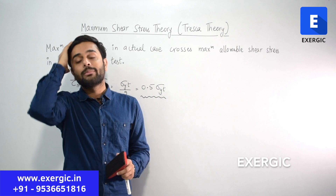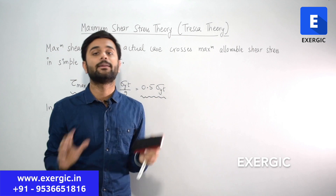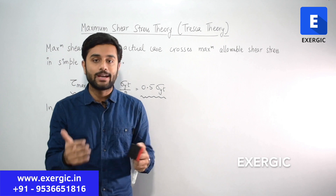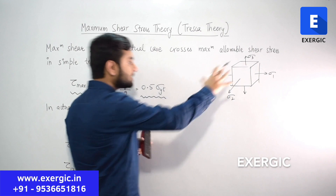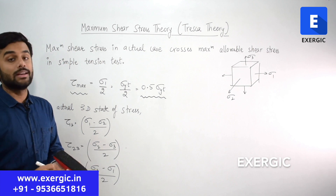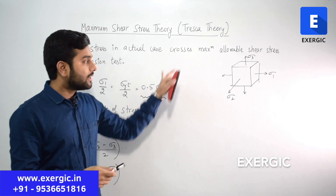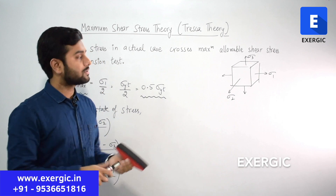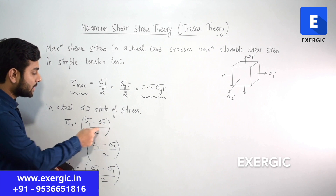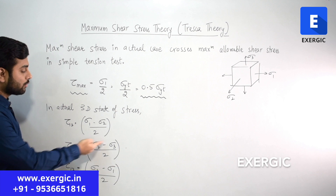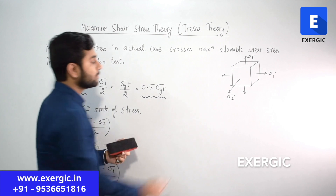Now we also need the maximum shear stress in the actual case. In any actual 3D state of stress, sigma_1, sigma_2, and sigma_3 all exist. In such a volume element, there are three different shear stresses defined on different planes: tau_12 = (sigma_1 - sigma_2)/2, tau_23 = (sigma_2 - sigma_3)/2, and tau_13 = (sigma_1 - sigma_3)/2, derived from the Mohr circle.